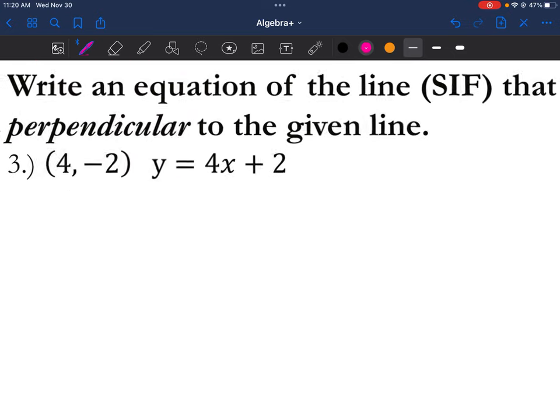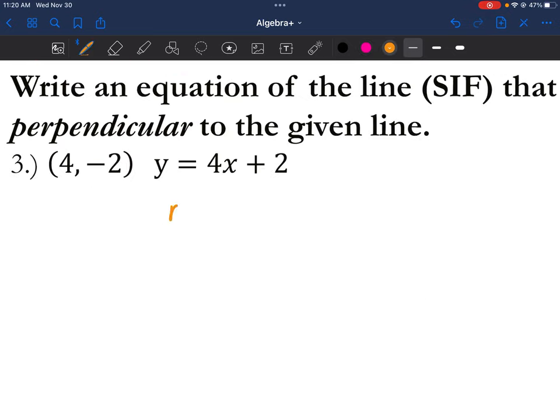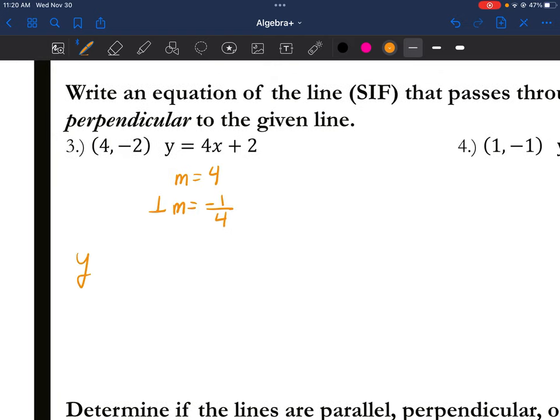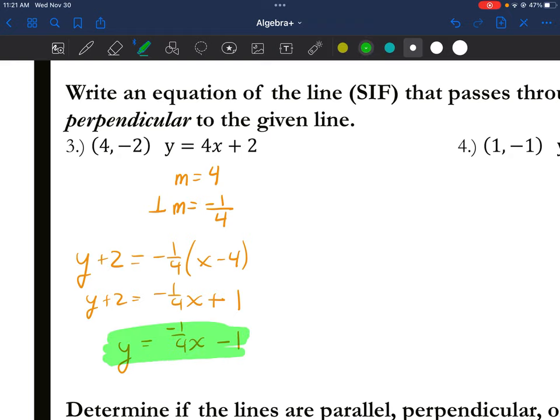You can do this for perpendicular as well. But what you have to do is identify that the slope is 4. So the perpendicular slope you're going to use is negative 1/4. Put this in slope intercept form. Once you put this in slope intercept form, you're going to distribute negative 1/4 x plus 1. And you're going to subtract. Y equals negative 1/4 x minus 1. Here is your final equation.